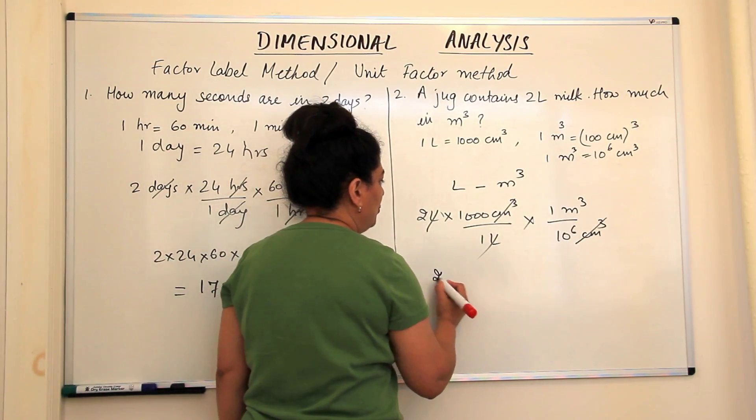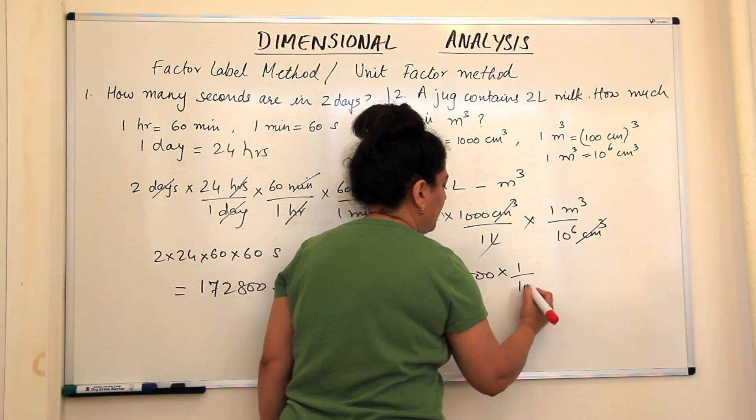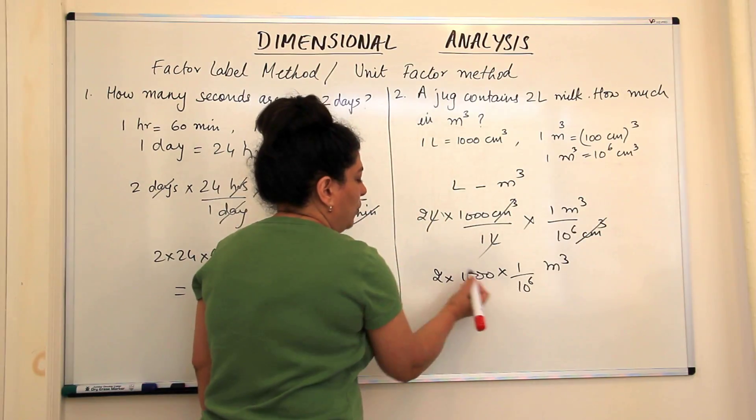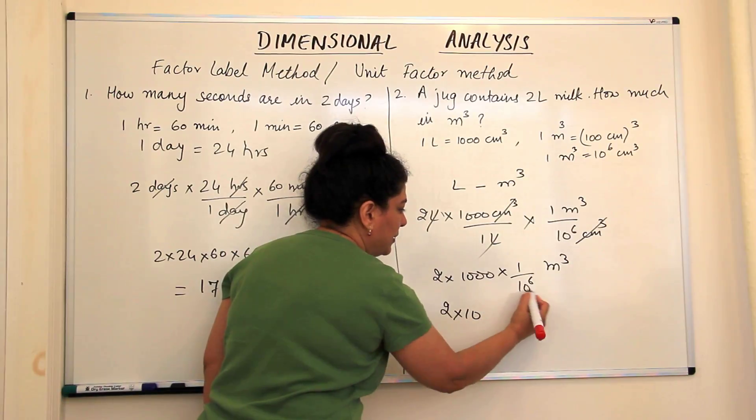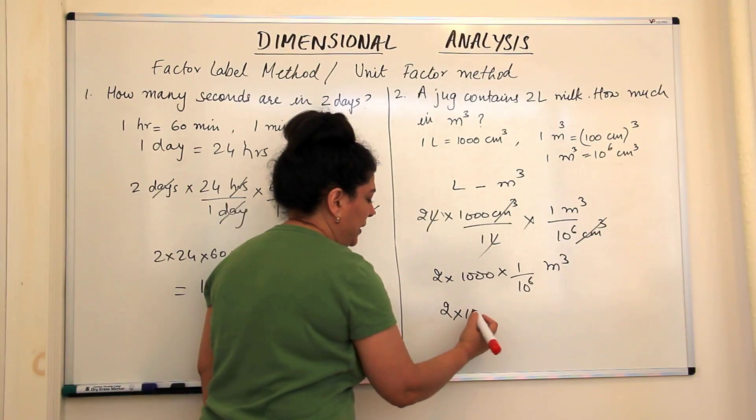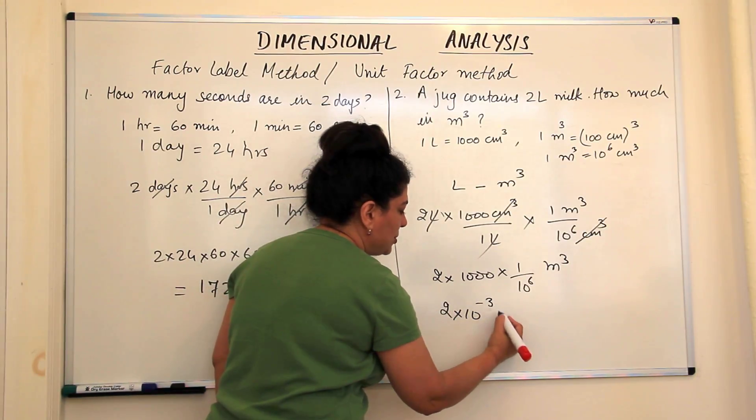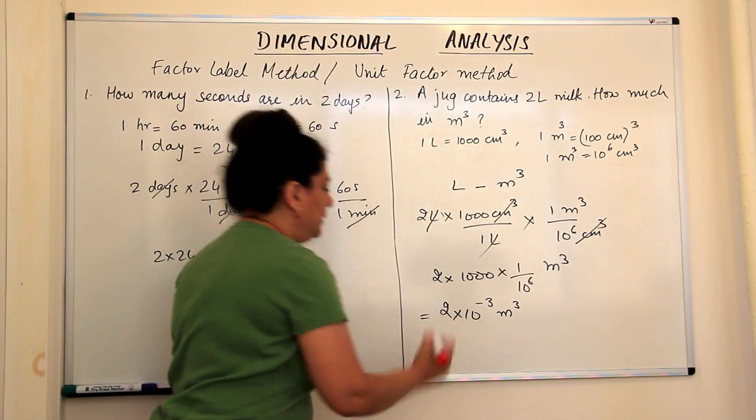We are left with 2 into a thousand into 1 upon 10 to the power of 6 metre cube. 1 upon 10 to the power of 6 would be 2 into 10 to the power... you are left with the thousand, this cancels out with 3 zeros here, so you are left with the power of 3. So if you bring it to the numerator, it will be 2 into 10 to the power minus 3 metre cube. That's our answer.